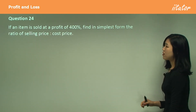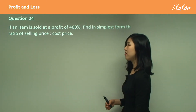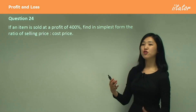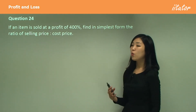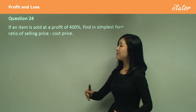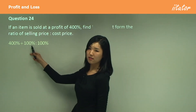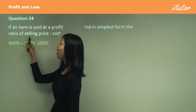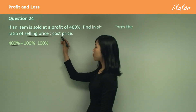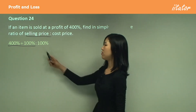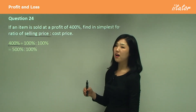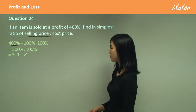If an item is sold at a profit of 400%, find in simplest form the ratio of selling price to cost price. We're making quite a big profit here — 400%. The original price of an item is always considered 100%, so if we're making 400% profit, the selling price is 400 plus 100, which equals 500%. The cost price is just the original 100%. So the ratio of selling price to cost price is 500 to 100, which simplifies to 5 to 1.